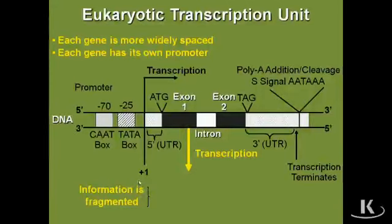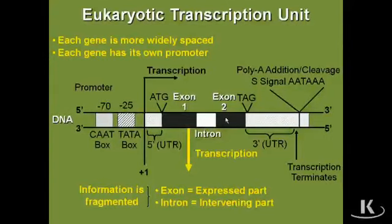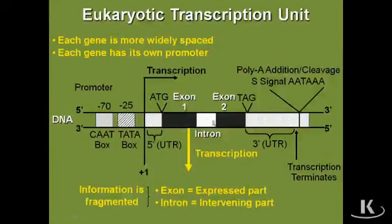The other key feature of eukaryotic transcription is that the information is fragmented into exons and introns. An exon is the expressed part of the gene, whereas the intron is the intervening part of the gene. On this particular schematic, there's exon sequence which is interrupted by an intron. It's the exon sequences that contain the important protein-encoding information. The introns have absolutely nothing to do with the protein sequence.